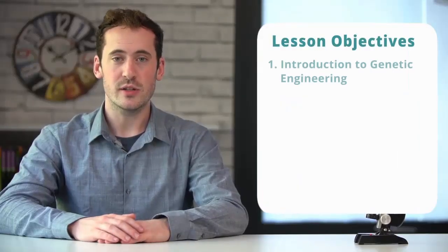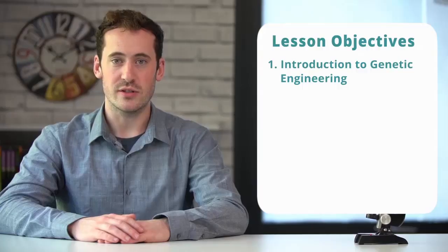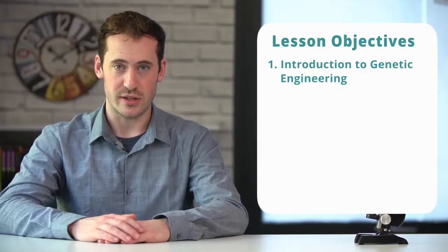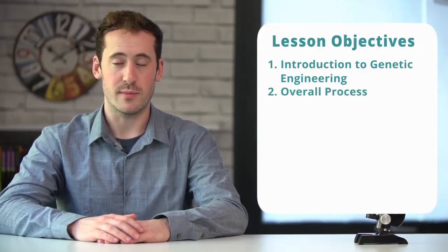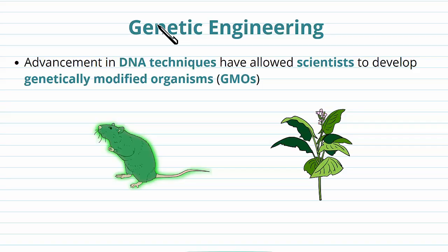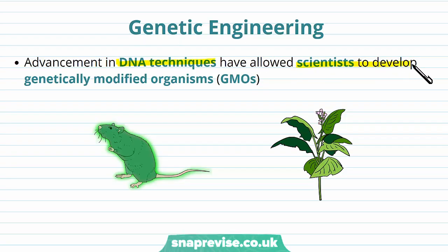Hi guys, in this video we'll be looking at an introduction to genetic engineering, the overall process, and then we'll finish with a summary. With our advancement in DNA techniques we've begun to discover ways of genetically modifying organisms. A genetically modified organism is sometimes written as GMO, and this can refer to both animals and plants.